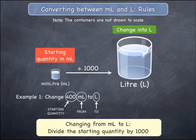The rule states that you must divide the starting quantity by 1000 to change from milliliters to litres. Referring back to the example, the starting quantity is 400 and you must divide this by 1000, giving 0.4, which is the answer in the new unit of litres. That is, 400 milliliters equals 0.4 litres.